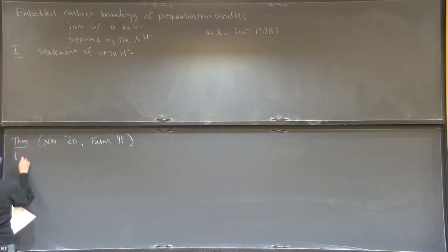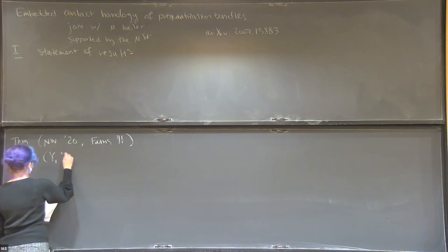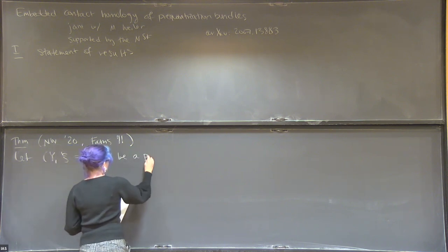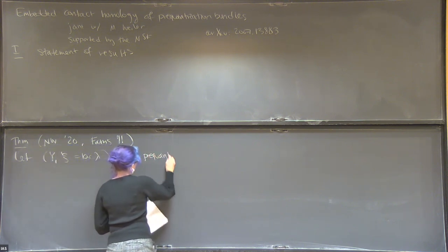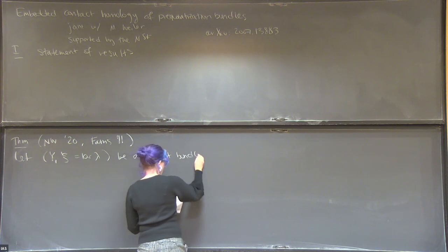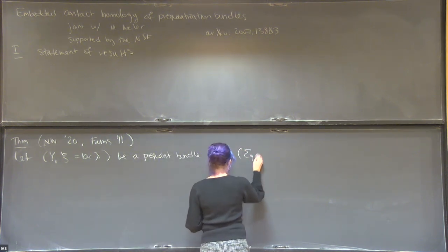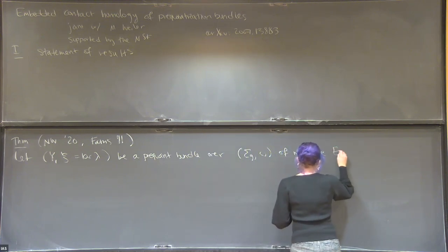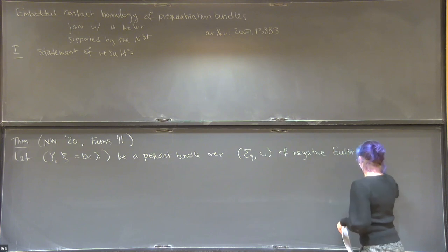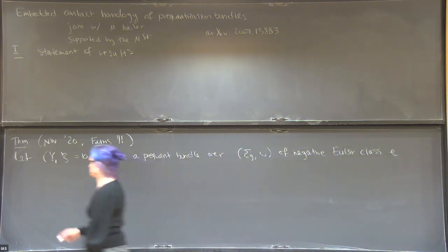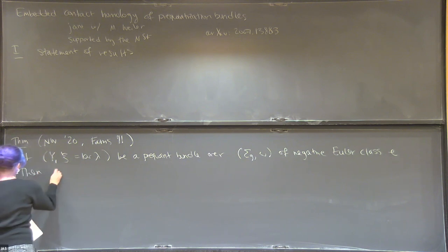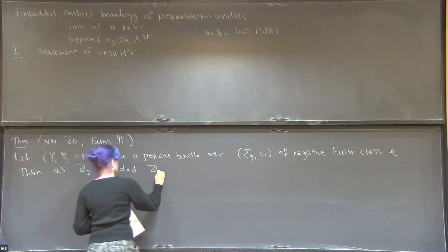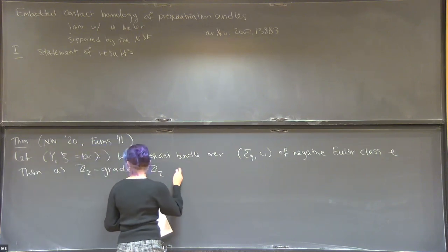The theorem is that if you have a pre-quantization bundle that's three-dimensional, over a closed surface of genus G, and it has negative Euler class E, then as Z2-graded Z2-modules, we have that the ECH corresponds to the exterior algebra of the base.